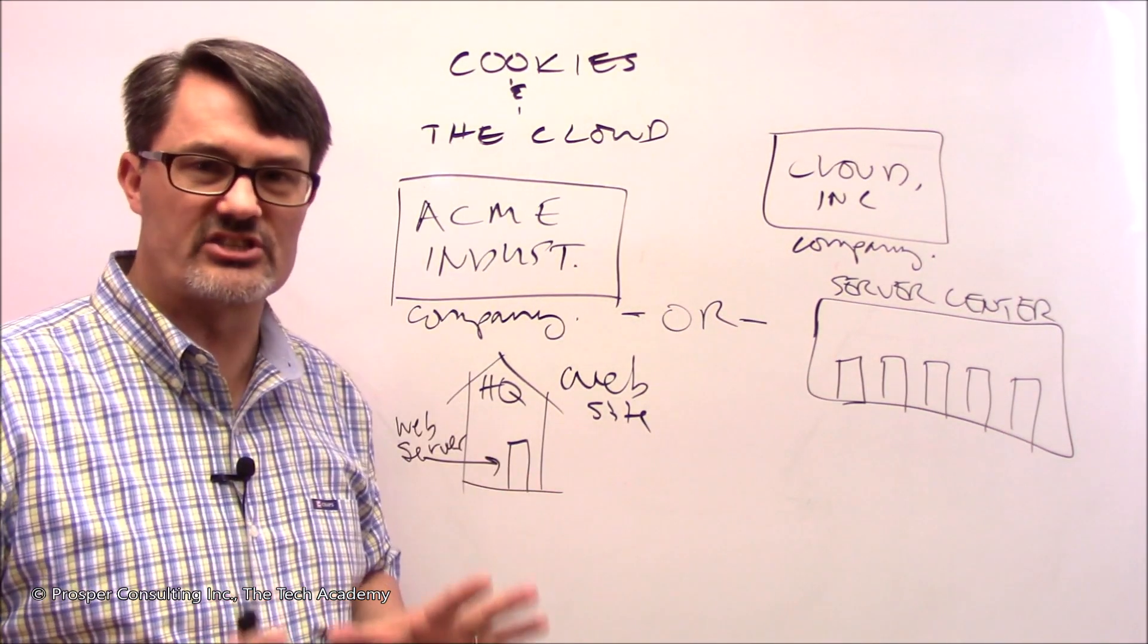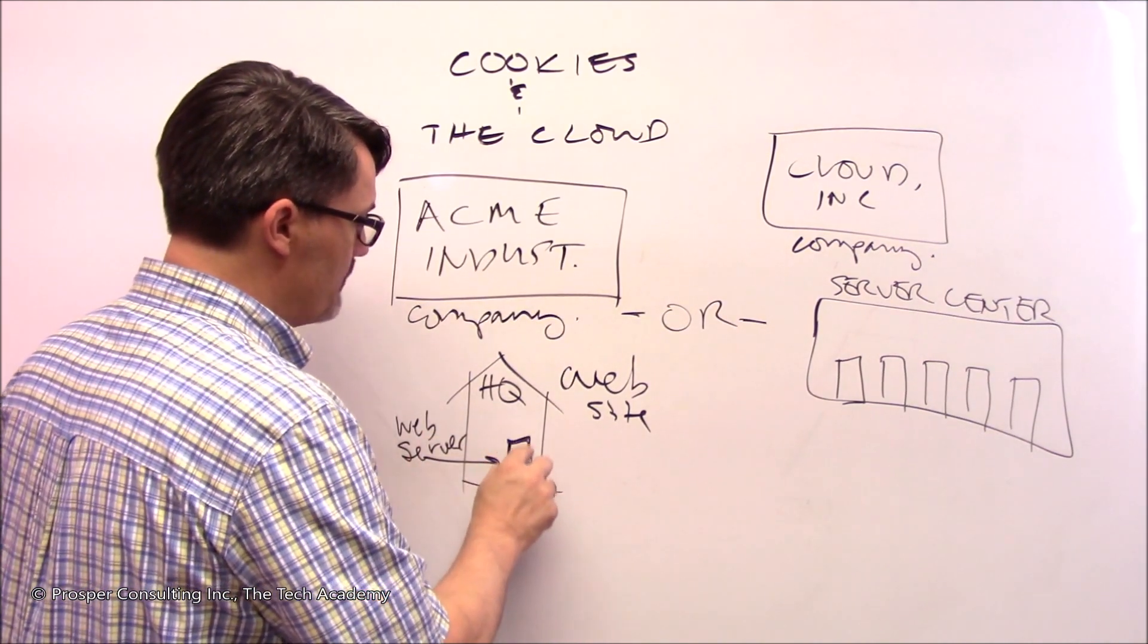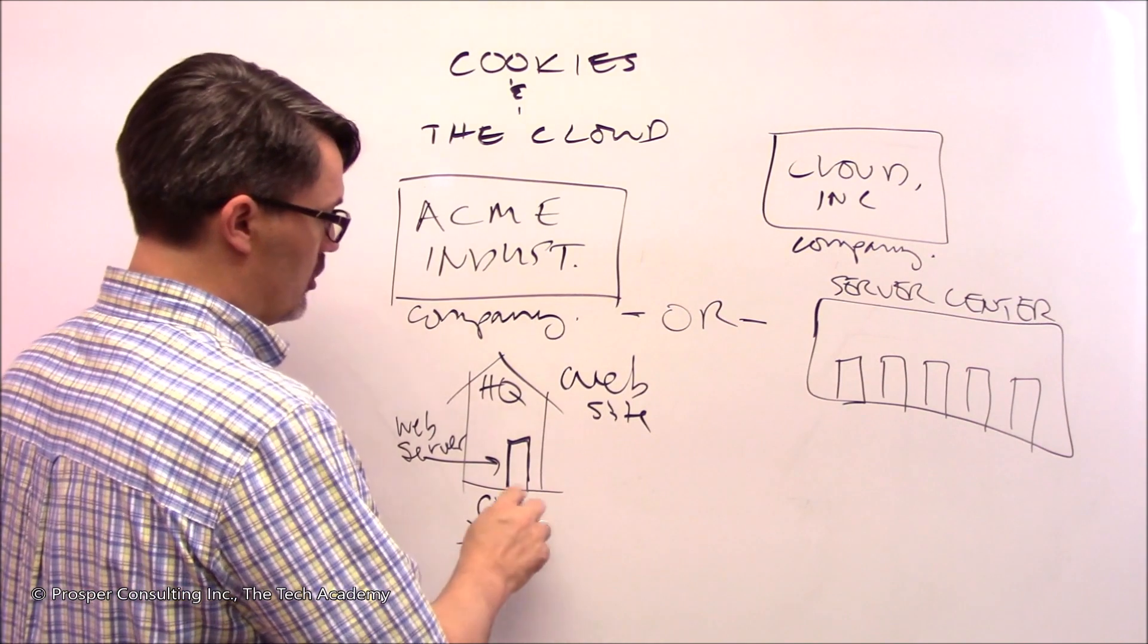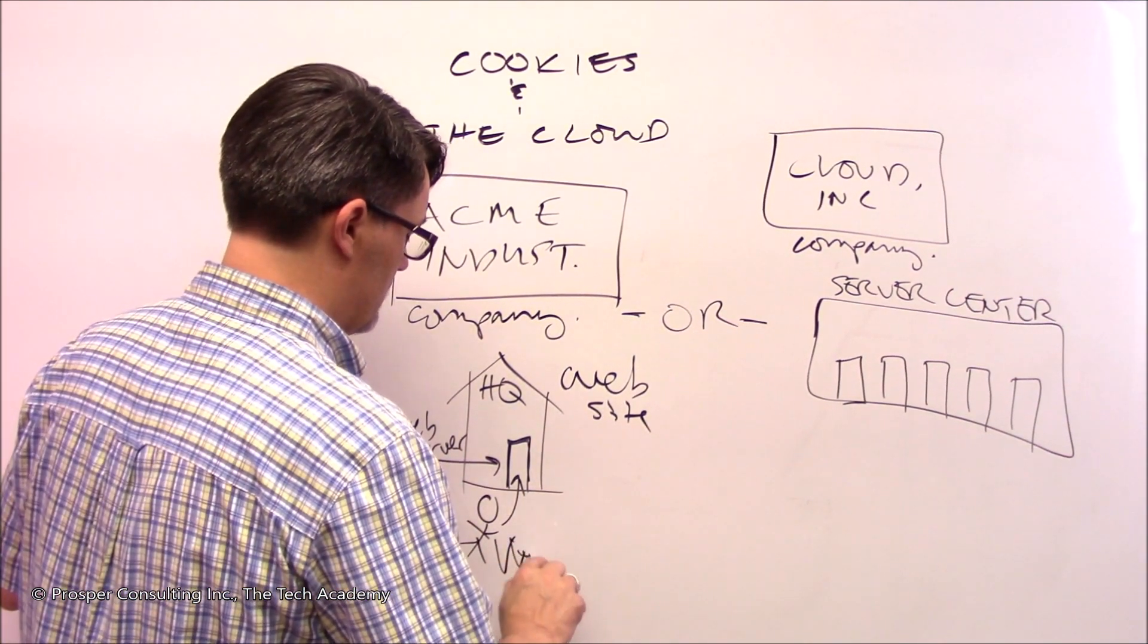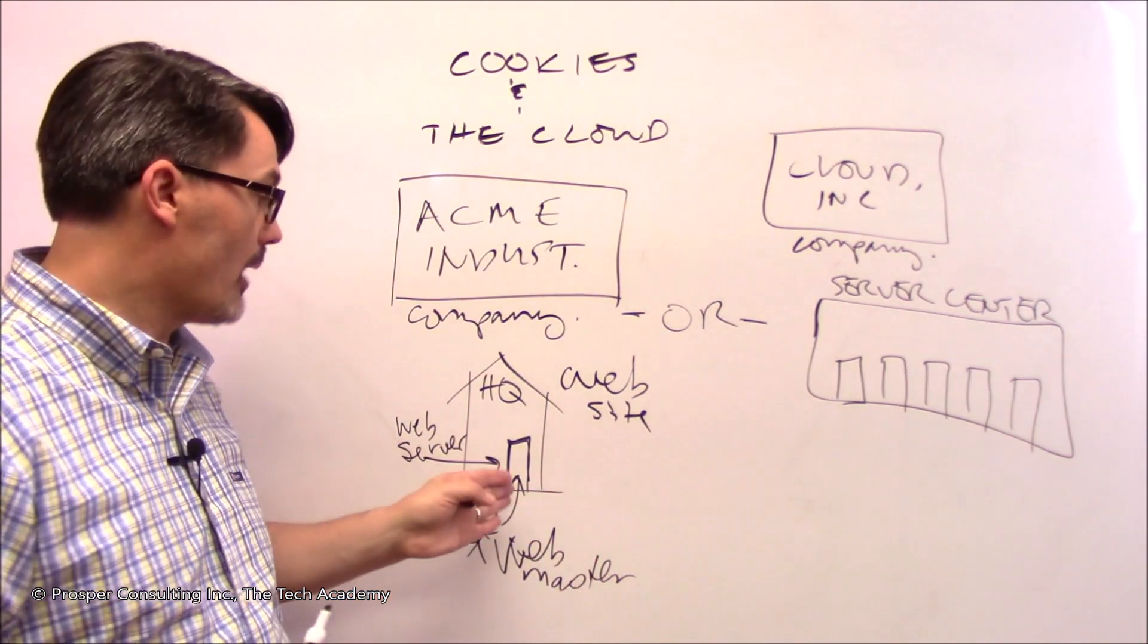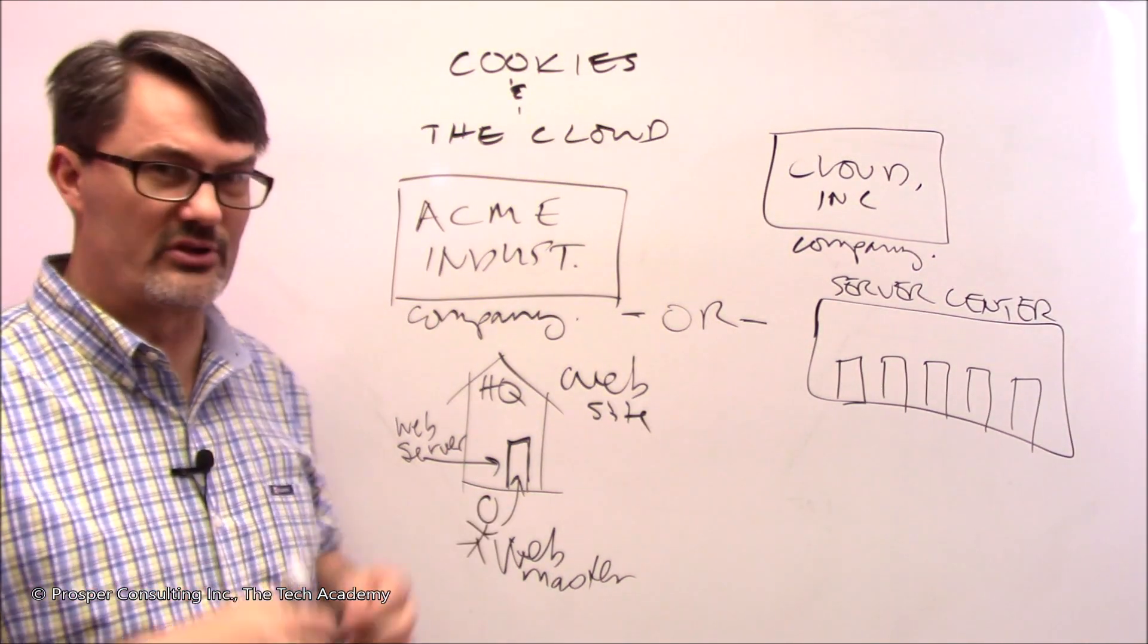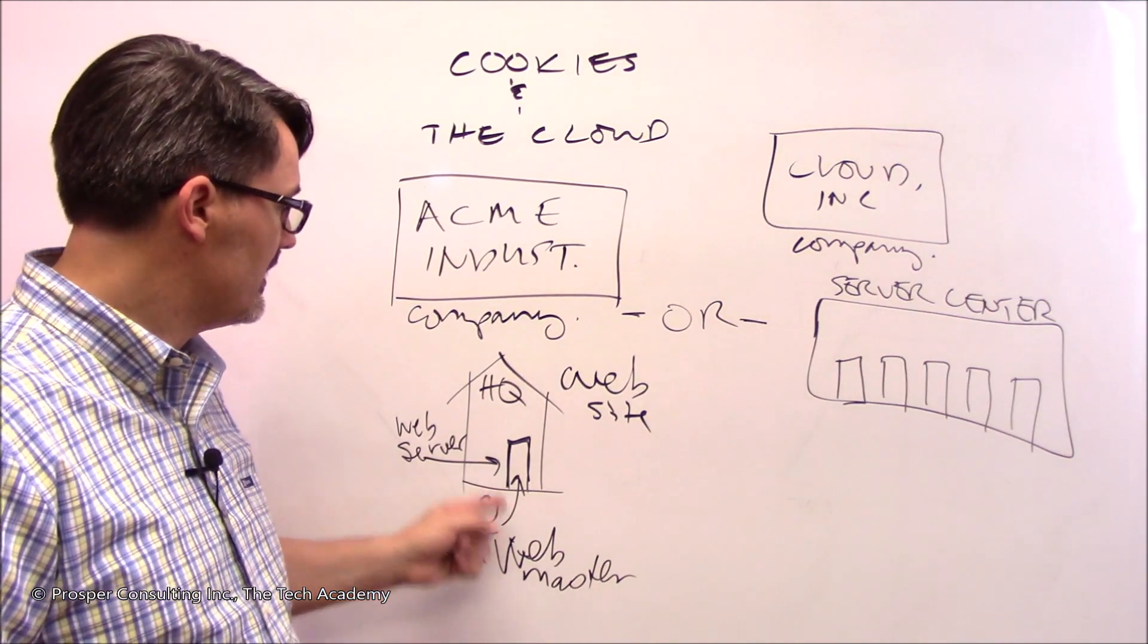So they have to make a decision. Are they going to have an actual web server in their building and have a person who runs that website in their building? Let's call them the webmaster. They could do that. They could go out and buy a large computer that's been optimized as a web server. You can go onto Amazon right now and buy a web server.